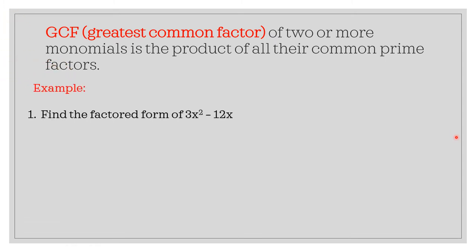For example, we are to find the factored form of 3x squared minus 12x. For the numerical coefficient, we can divide 3 and 12 — the prime factorization of 3 and 12 gives us 3, while for x squared and x, the common factor is x. So therefore, our GCF is 3x.